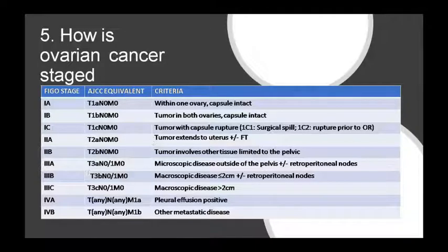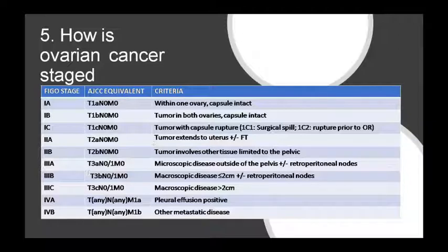Stage 3A: microscopic disease beyond the pelvis. Stage 3B: macroscopic disease. Stage 4A: positive pleural effusion with metastasis. Stage 4B: other distant metastatic disease.